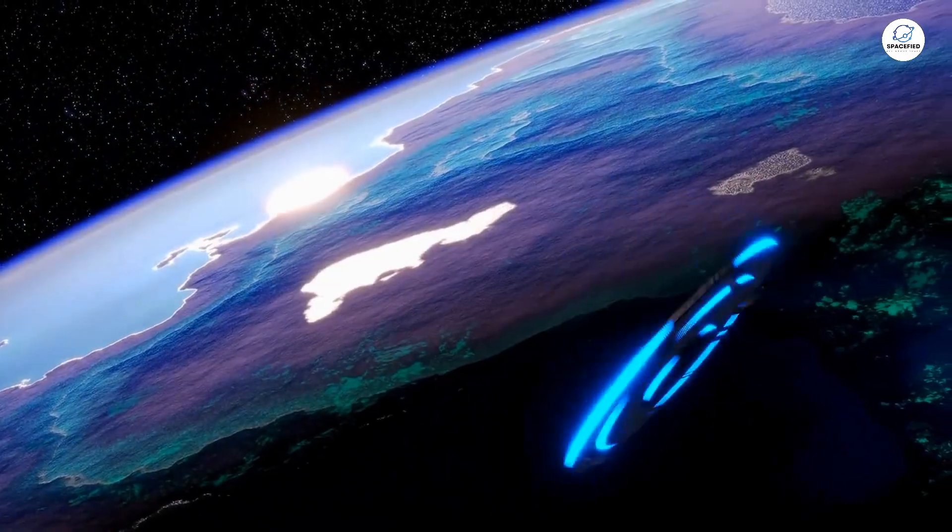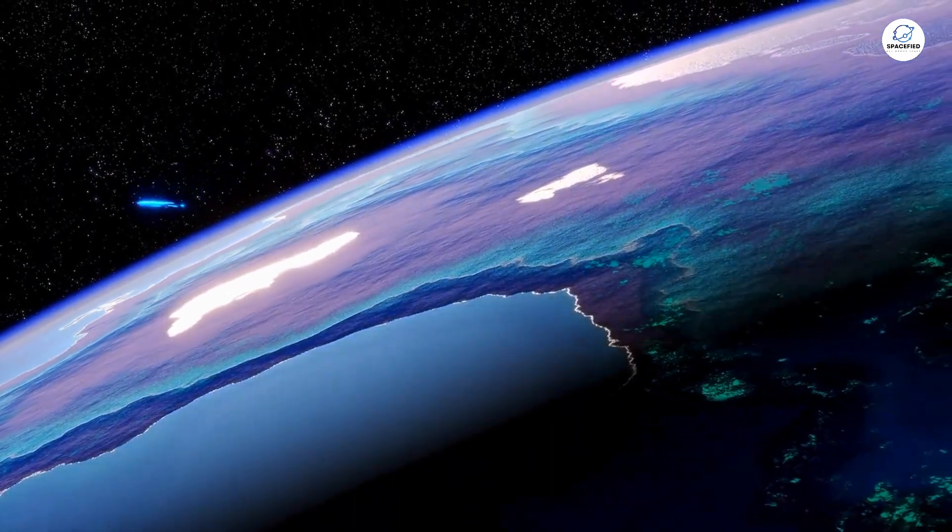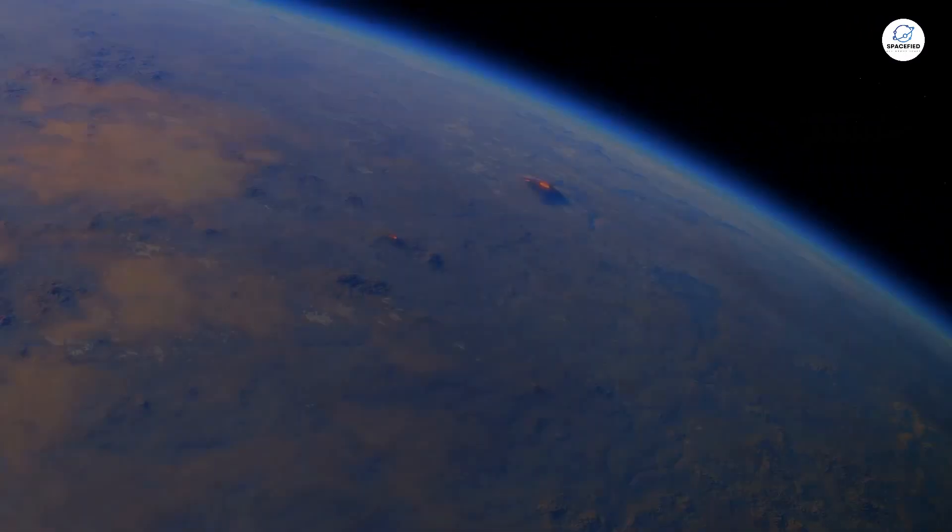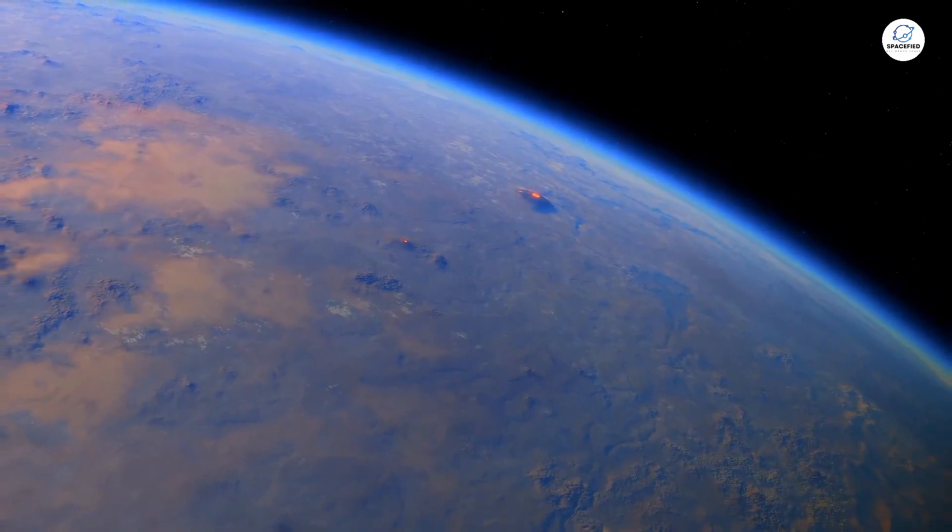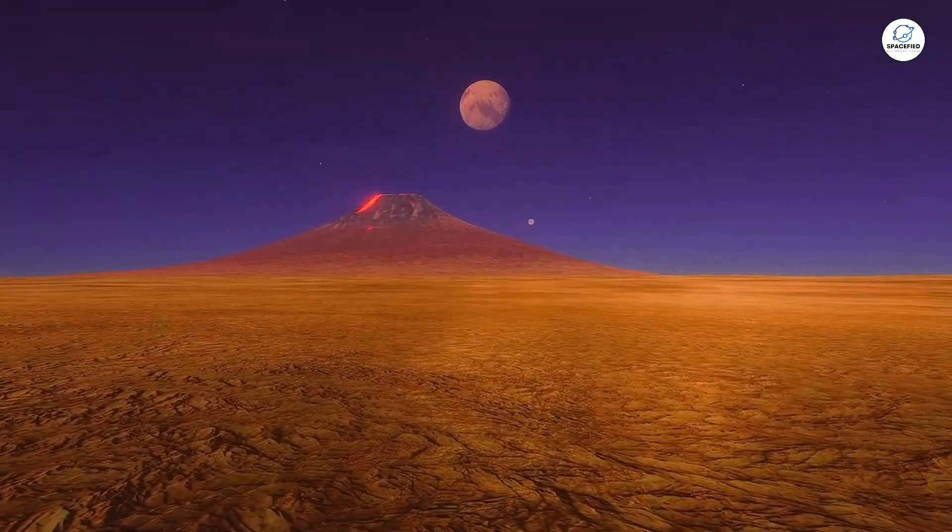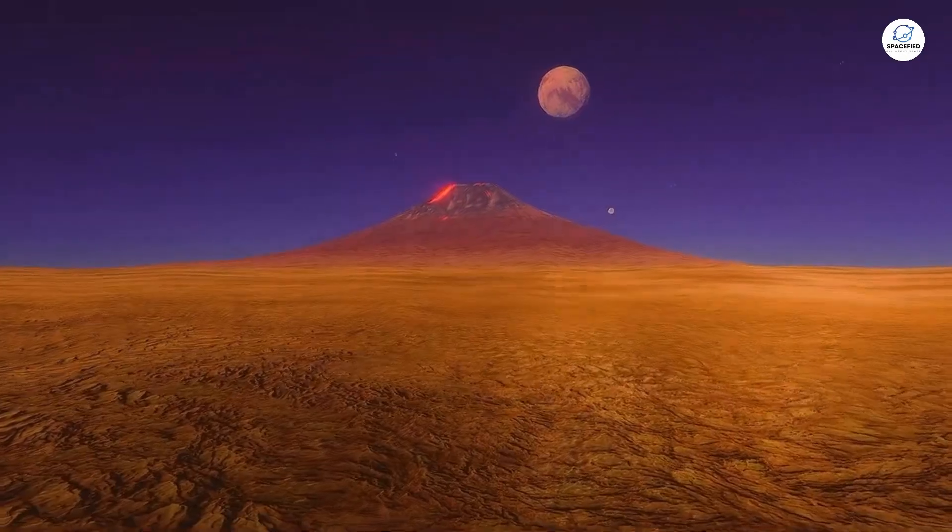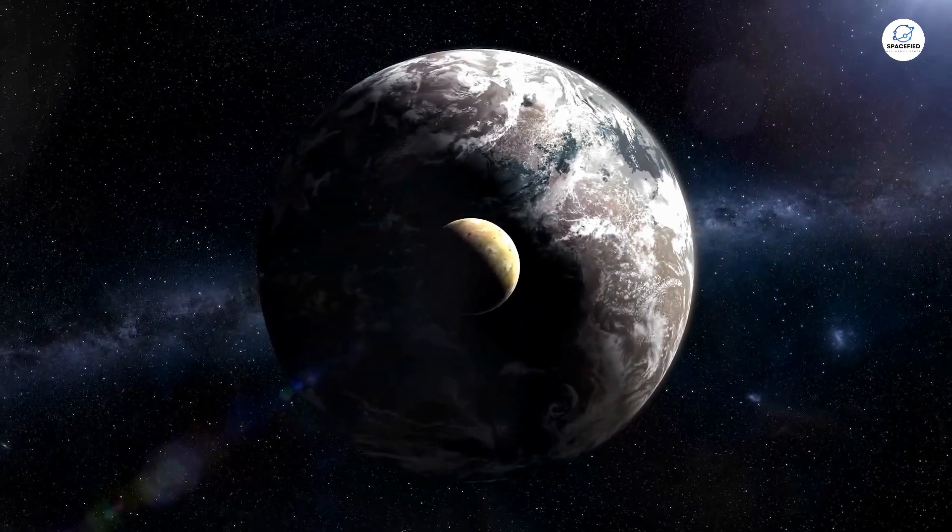What sets Gliese 581g apart from many other exoplanets is its size and the nature of its orbit. Classified as a super-Earth, Gliese 581g is larger than our planet, but smaller than gas giants like Neptune. This means that it could have a solid surface, which is essential for any Earth-like life to develop. Its orbit is another point of interest.